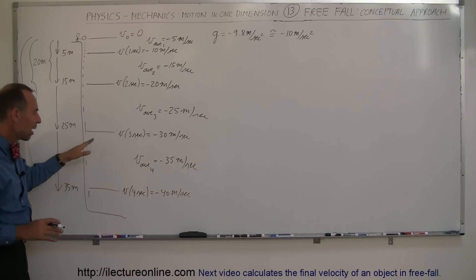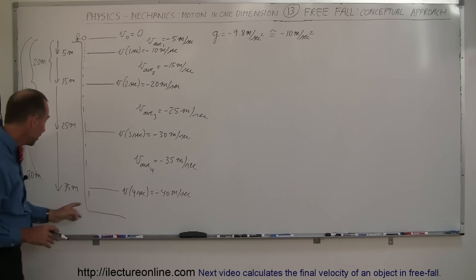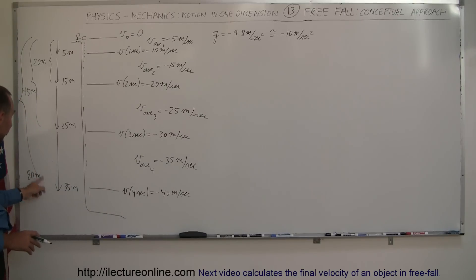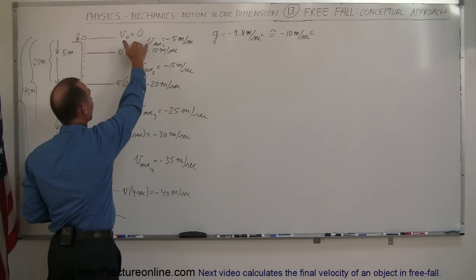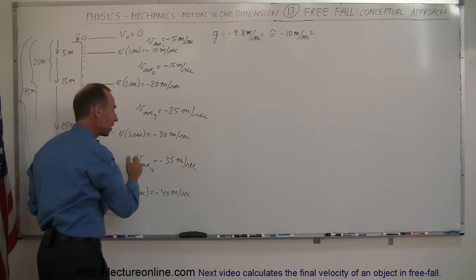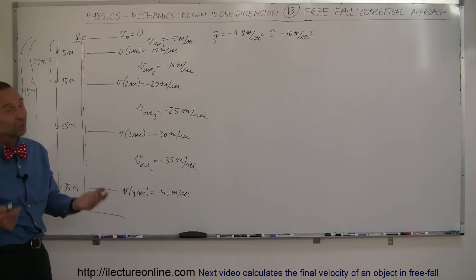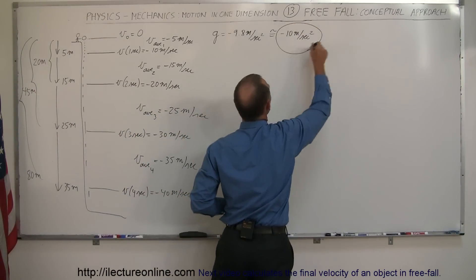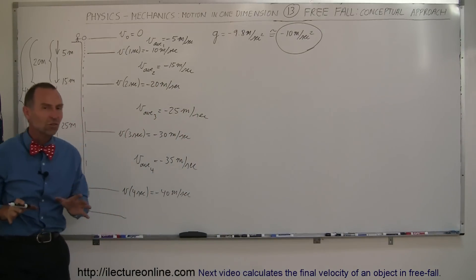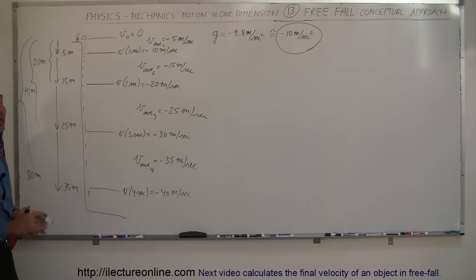How far do you think it will drop in the fifth second? It will be 10 more meters — that would be 45 meters — and it will have fallen a total distance of 80 plus 45, or 125 meters. Notice the average velocities were minus 5, minus 15, minus 25, and minus 35 meters per second. Every second the average velocity increases by an additional 10 meters per second, which makes sense if the acceleration is minus 10 meters per second squared. This is a conceptual look at how things accelerate during free fall, and hopefully it will help you understand the coming problems.